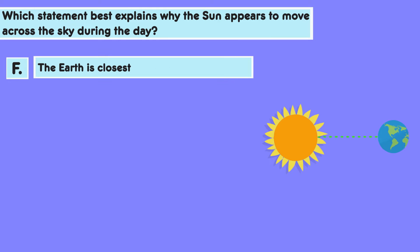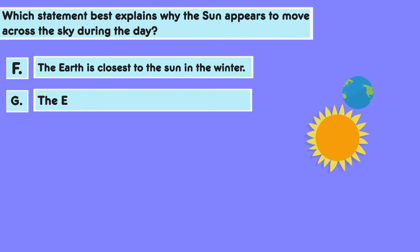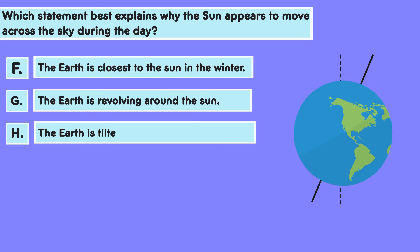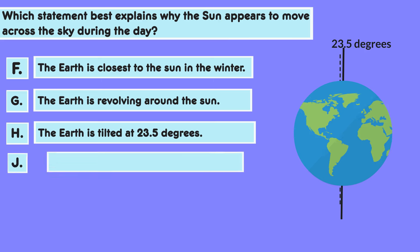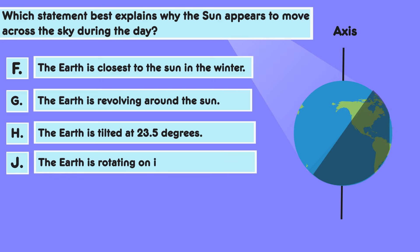F. The Earth is closest to the sun in the winter. G. The Earth is revolving around the sun. H. The Earth is tilted at 23.5 degrees. J. The Earth is rotating on its axis.